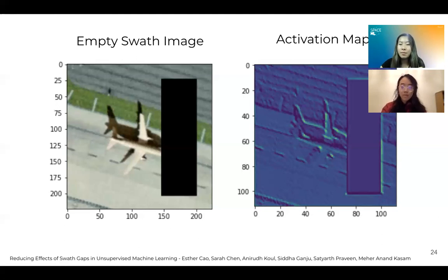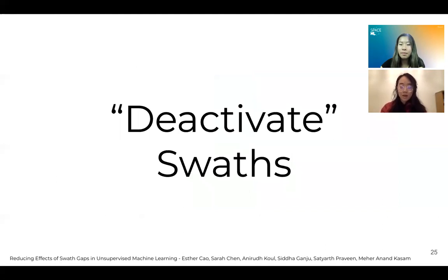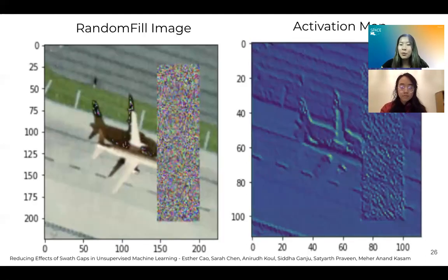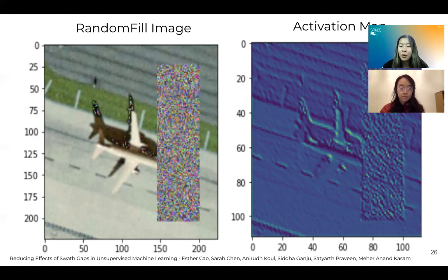So how can we fix this issue? Our approach was to deactivate the swath. We quantified our results using the accuracy of the autoencoder and visualized them through activation maps as a preliminary metric to rigorously visualize how well the swath gaps were filled. Our first solution idea was to fill the swath with random RGB pixel values, wanting the activation map to ignore the swath gap area by filling the data gaps with a featureless pattern. However, as you can see from these images, even though the activation maps were focused less on the random RGB inside the swath gap, they were still very focused on the edges.